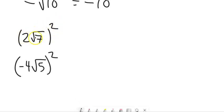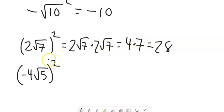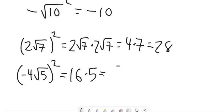So for (2√7)²: everything inside is squared, so you can write it as 2√7 times 2√7. 2 times 2 is 4, and root 7 times root 7 is 7, so 4 times 7 is 28. For (−4√5)²: negative 4 squared is 16, and root 5 squared is 5. 16 times 5 is 80. Note: on a calculator, entering −4² gives −16, not 16, because it computes −(4²). Entering (−4)² gives the correct positive 16.